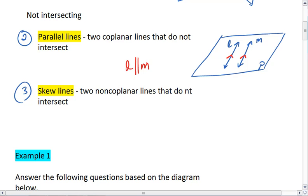The last possible relationship between lines are skew lines. Skew lines are two non-coplanar lines that do not intersect. I want you to think for a moment of, let's see, let's think about a box.